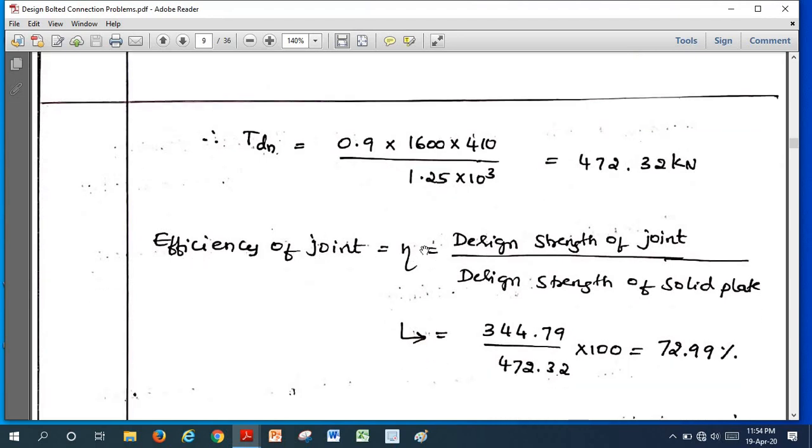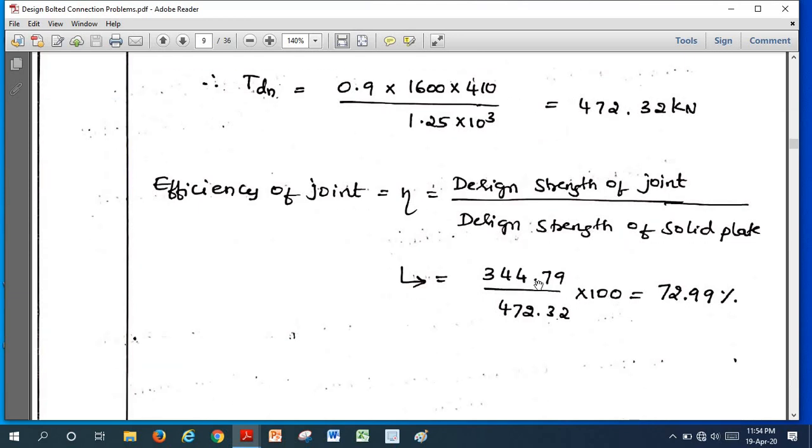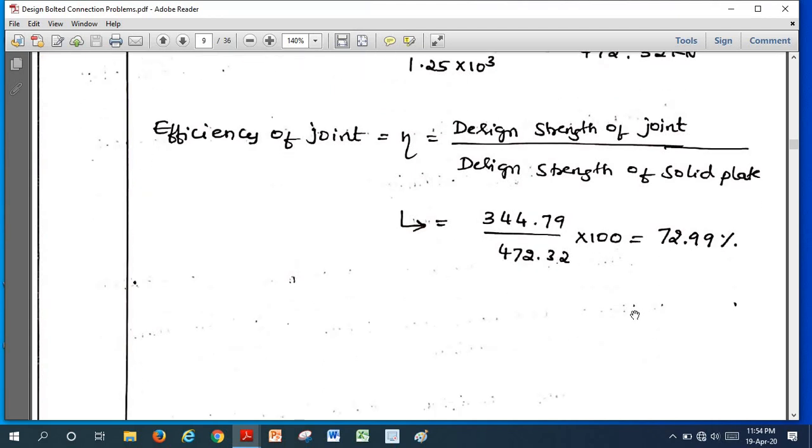So now this is the efficiency of the joint formula: efficiency = design strength of the joint, that is least value of bearing strength, shear strength and tension failure of plate, divided by strength of solid plate. 344.79 / 472.32 × 100, we are going to get 72.99% is the efficiency of the joint with the given bolt arrangement. Thank you very much.